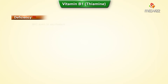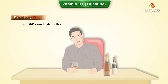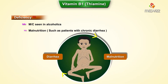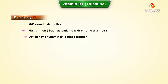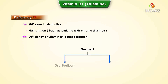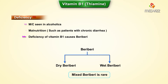Deficiency of vitamin B1 is most commonly seen in alcoholics and in malnutrition, such as patients with chronic diarrhea. The deficiency presents as beriberi, which is of two main types: dry beriberi and wet beriberi. A third type, mixed beriberi, can also be seen but is rare.